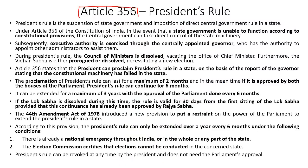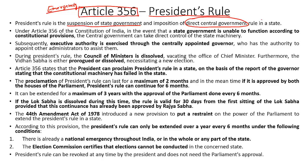Article 356 of the Indian Constitution is considered as an emergency provision which provides for the imposition of President's rule in a state. When President's rule has been imposed, it will suspend the state government and impose the direct rule of the central government in that state. We need to understand under what circumstances Article 356 can be invoked by the central government.